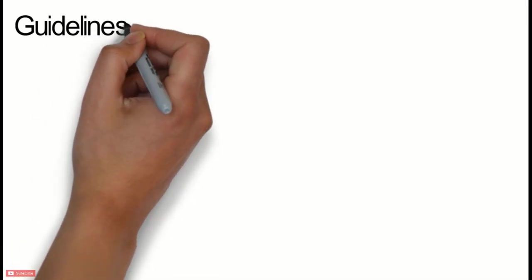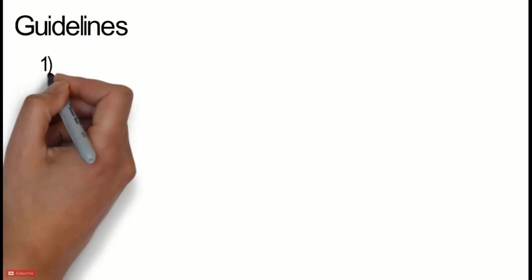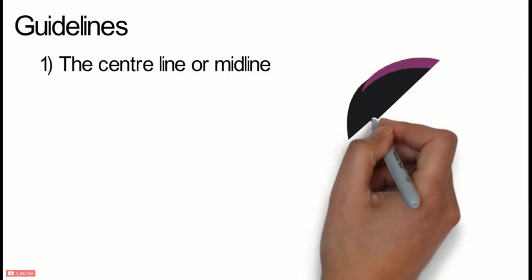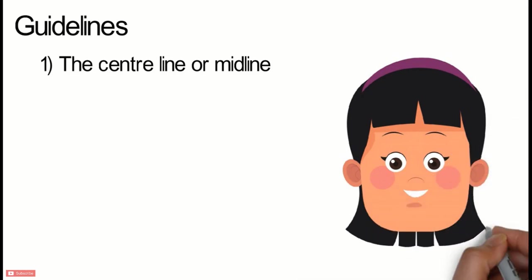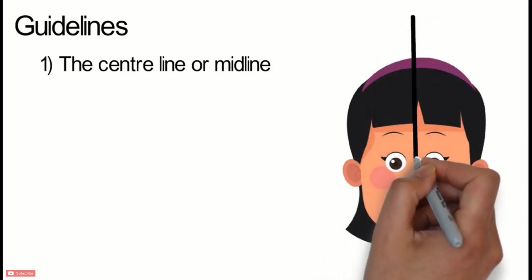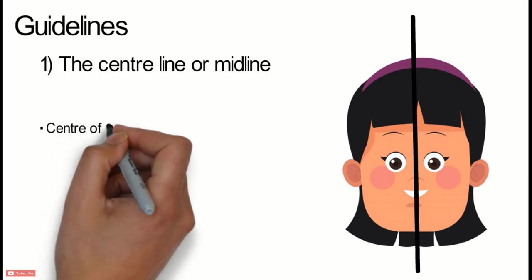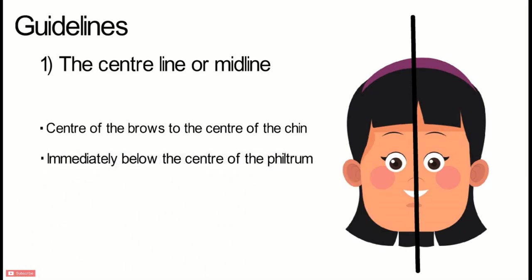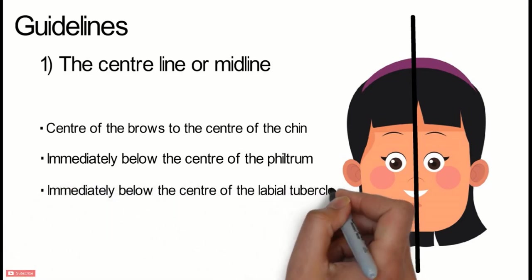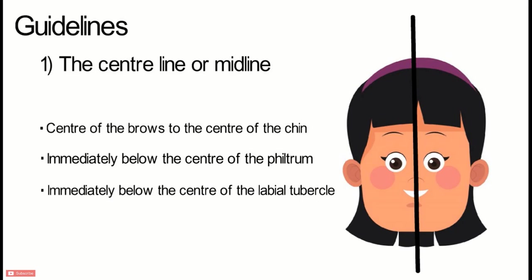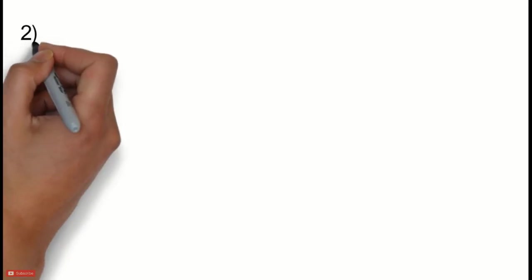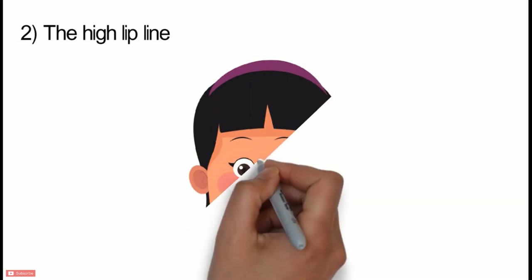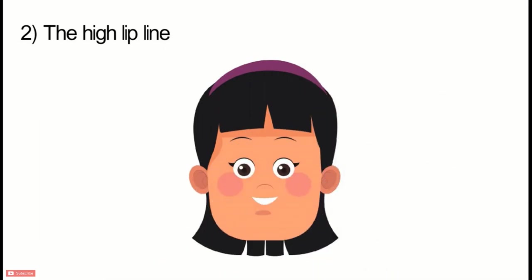There are a few guidelines which need to be followed during the process of jaw relation recording. Firstly, the midline needs to be marked. In the normal natural dentition, the upper central incisors have their mesial surfaces in contact with an imaginary vertical line which bisects the face, and for aesthetic reasons it is desirable that the artificial teeth should occupy the same position. This vertical line can be drawn from the center of the eyebrows to the center of the chin, or immediately below the center of the philtrum to the chin, or immediately below the center of the labial tubercles. Next is the high lip line. This is the line just in contact with the lower border of the upper lip while smiling or laughing. It is marked on the labial surface of the rim and indicates the amount of denture which may be seen while smiling or laughing.